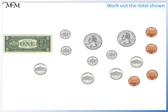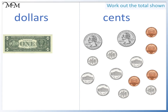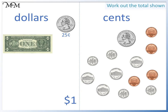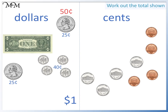Here's our final example. Again, we'll separate the money into dollars and cents. Looking at the dollars, we have one dollar. Now we'll look at the cents to see if we can make another dollar. We have a quarter, which is worth twenty-five cents. We have another quarter, which is another twenty-five cents, giving us a total of fifty cents. We have four dimes, each worth ten cents, so forty cents altogether. This takes us up to ninety cents.